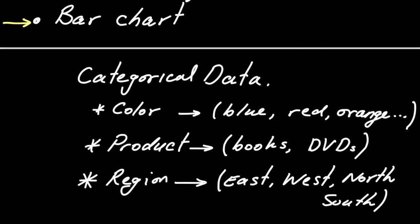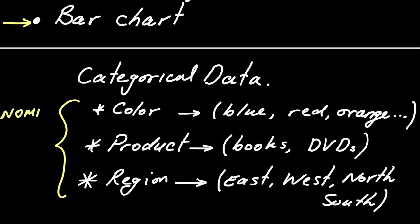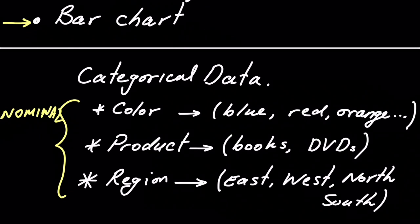What is categorical data? Categorical data is non-numerical. For example, it could be color — blue, red, orange — or product — books or DVDs — or region — east, west, north, south. More specifically, these categorical data are called nominal because there's no inherent order in the individual values. East doesn't come before west; there is no natural order. In a later video we'll talk about ordinal categorical data, which does have order.